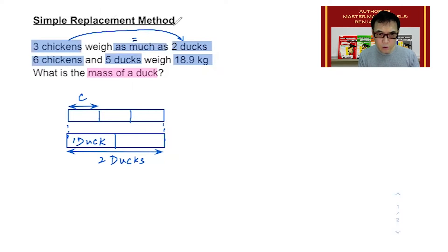So right now, I'm going to draw 3 more boxes to represent a total of 6 chickens. This would be chicken, chicken, chicken, for a total of six chickens.